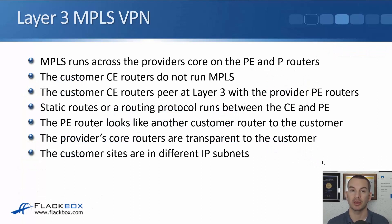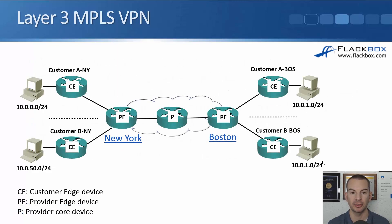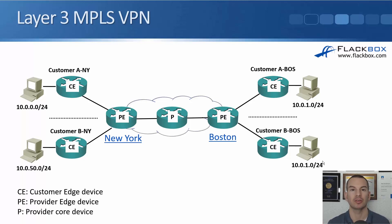MPLS runs across the provider's core on the PE and P routers. The customer CE routers do not run MPLS. Looking at the diagram, MPLS is configured on the two PEs and the P routers — it is configured on the provider devices. The CE routers do not have MPLS enabled; they're not MPLS aware at all.